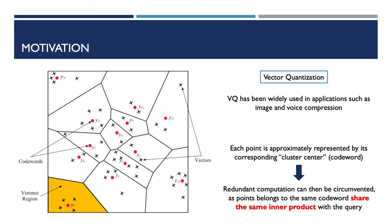Let's say we have 1000 points in a high dimensional space. Then in vector quantization, each point can be approximately represented by its corresponding cluster center. We call this cluster center as code words. So we can cluster these 1000 points into 10 clusters, and each point can be represented by its cluster center. For instance, the four points in the yellow region of this figure can all be represented by the red point Y5. In this way, we can not only compress the space needed to store the 1000 points, we can also circumvent the redundant computation of inner product computation. As we can see, the inner product between a given query to the points belonging to the same cluster center share the same inner product.